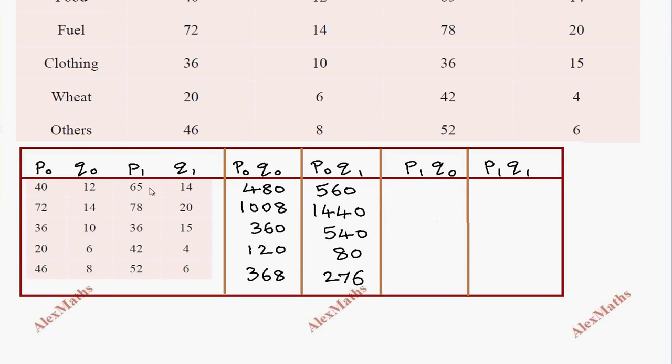Next, P₁Q₀. 65 into 12 equals 780. 78 into 14 equals 1092. 36 into 10 equals 360. 42 into 6 equals 252. 52 into 8 equals 416. For P₁Q₁, 65 into 14 equals 910.